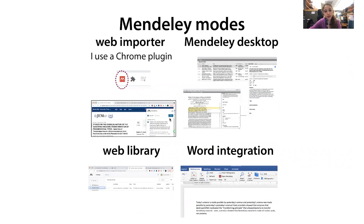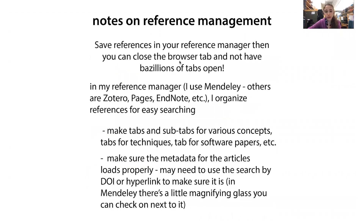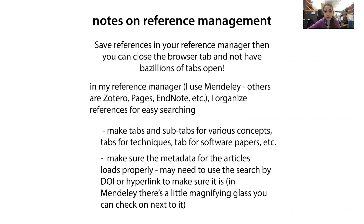When I'm on an article page, I just click a little icon in my browser and then I can add the article to my library. Inside my library, I make tabs and subtabs for various concepts — so I'll have a tab for each technique and then subtabs within it, and tabs for different papers on software, that sort of thing. This way I can easily find things.